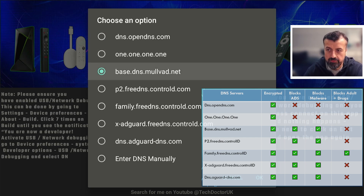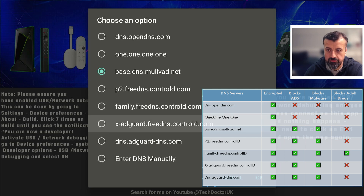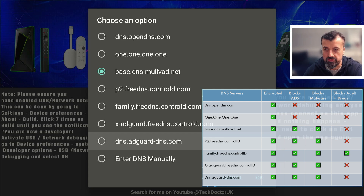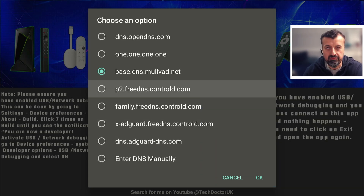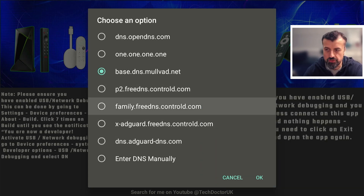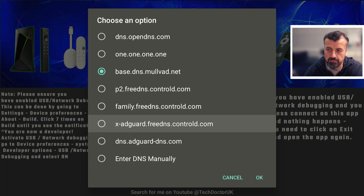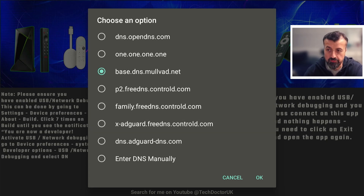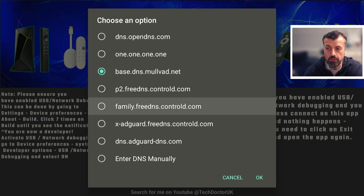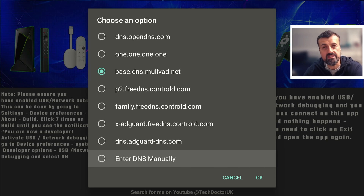The next five are designed for ad blocking at varying strengths. You may start with one and find some adverts still get through, then switch to another. The main thing is we have multiple options to choose from, and if none of these suit you, you can always enter your own DNS server manually.